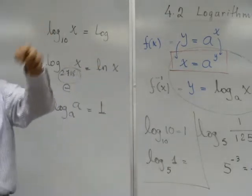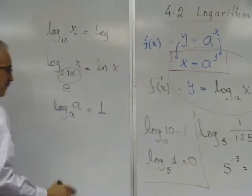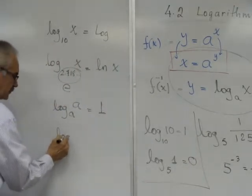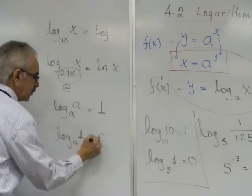Okay, 5 of 1 equals to what? 5 to which power is equal to 1? Zero. Zero. You discover another property. Log of any basis of 1 is equal to 0.